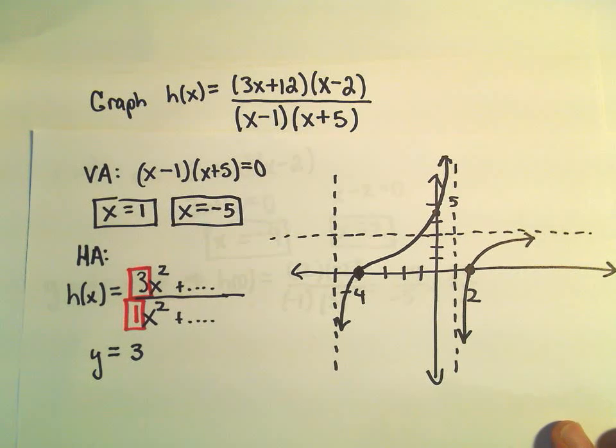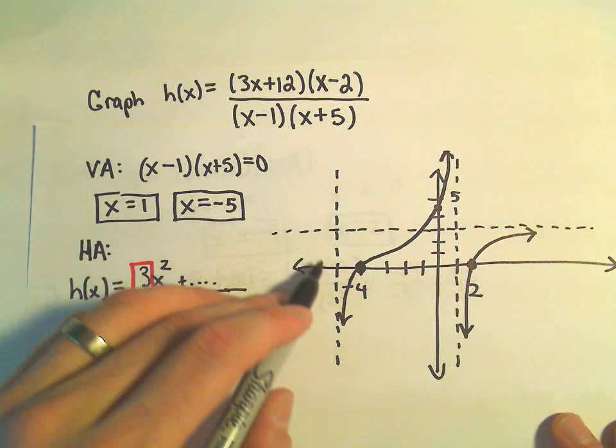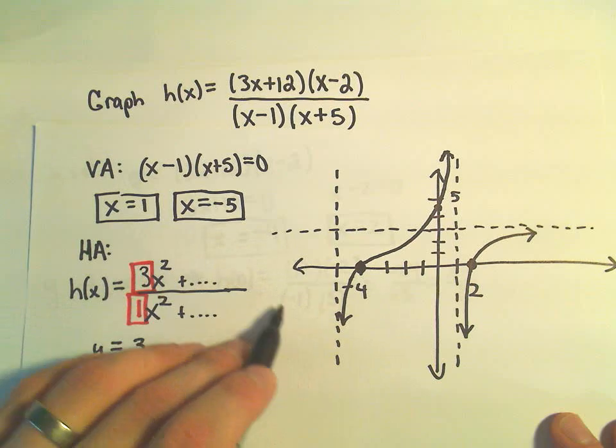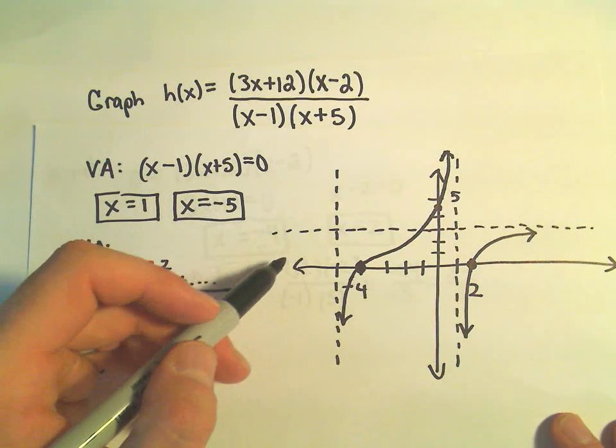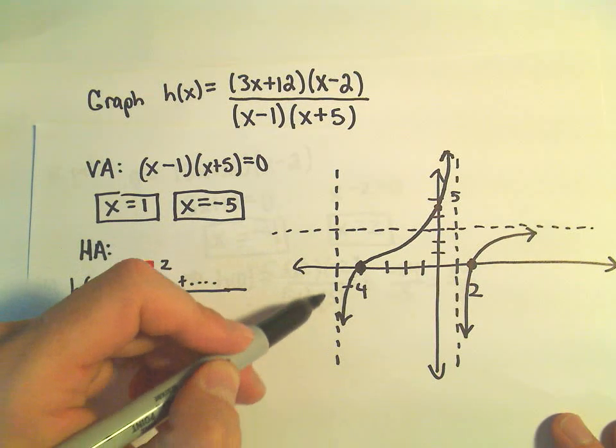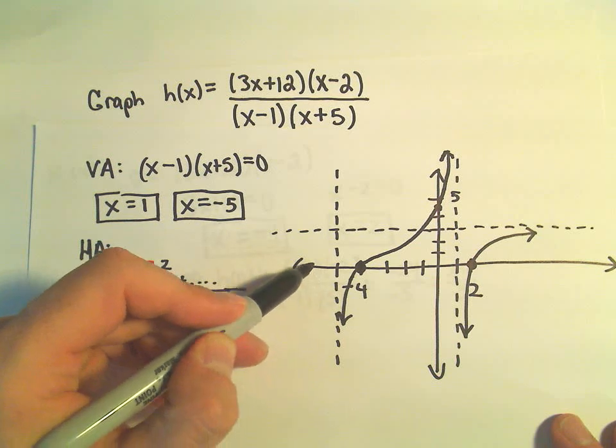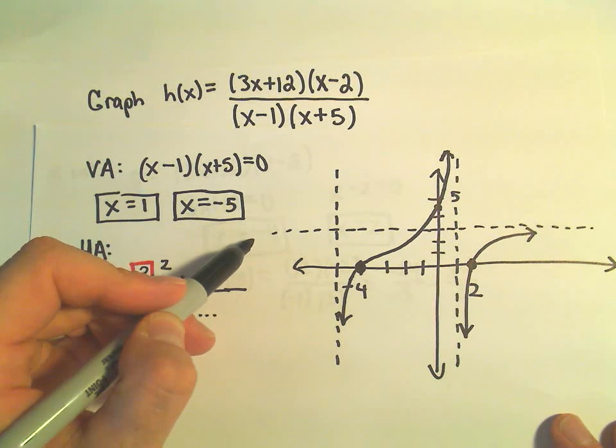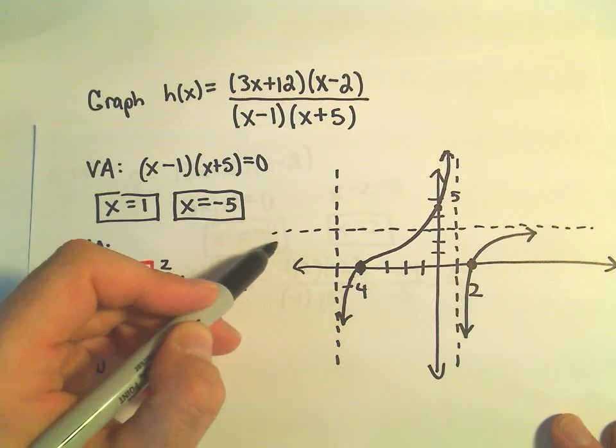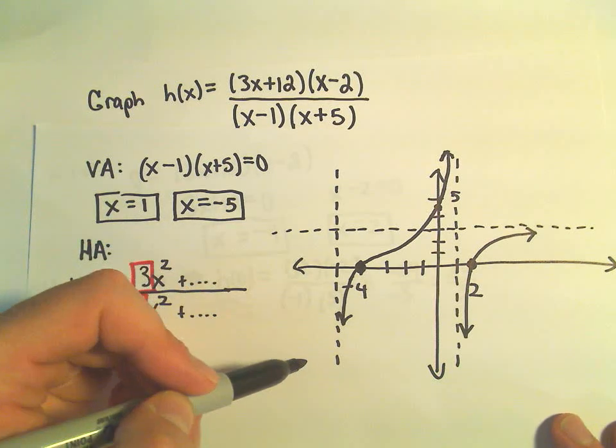So the only portion of the graph that I really don't know yet is what's going on over here. But I think we can make the same conclusion. The graph couldn't be down here because it would have to cross the x-axis yet again to get to this horizontal asymptote, which would mean there's another x-intercept, which we're not allowed to have.